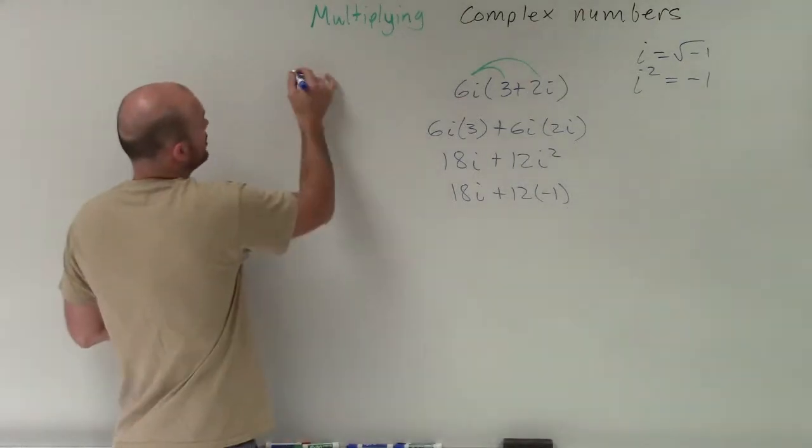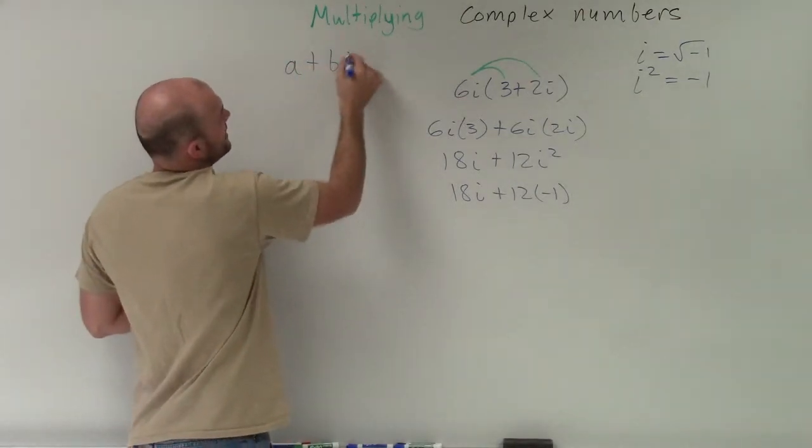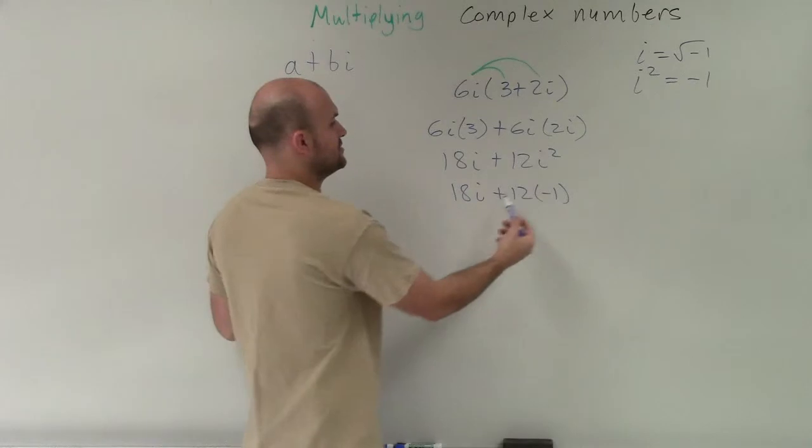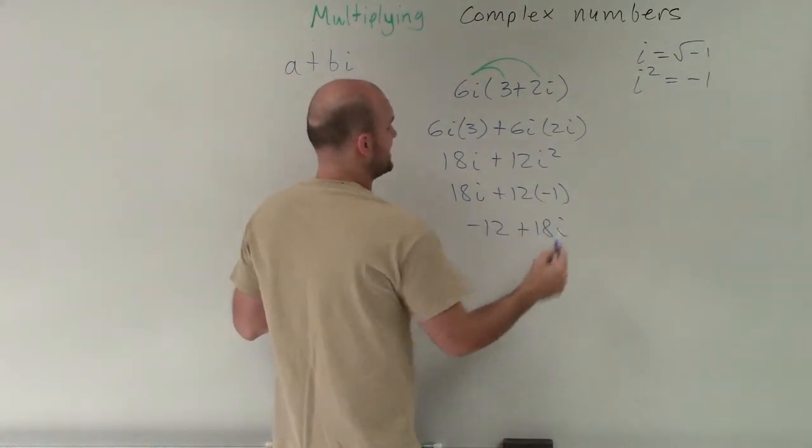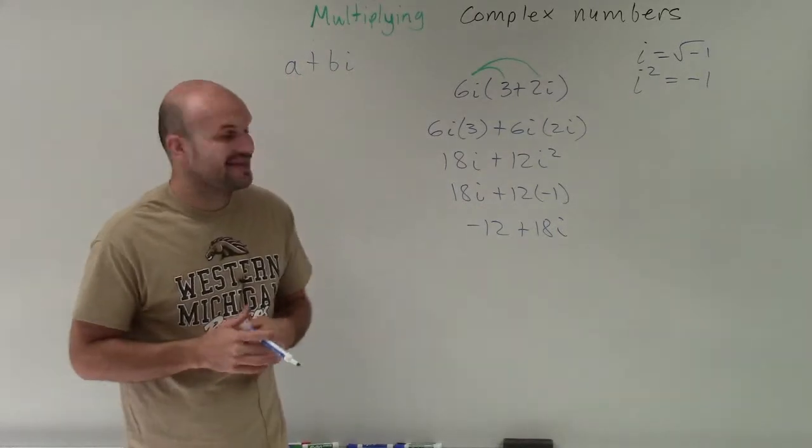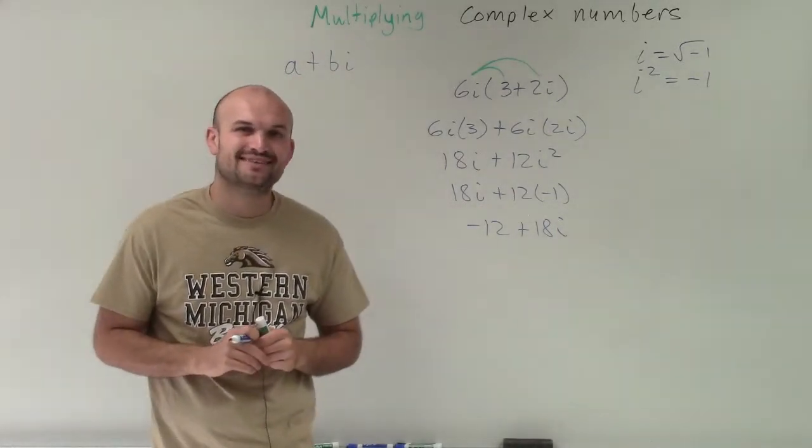Now I rewrite this. Remember, all complex numbers should be written in the form a plus bi. Therefore, this is negative 12 plus 18i. That is how you multiply complex numbers. Thanks.